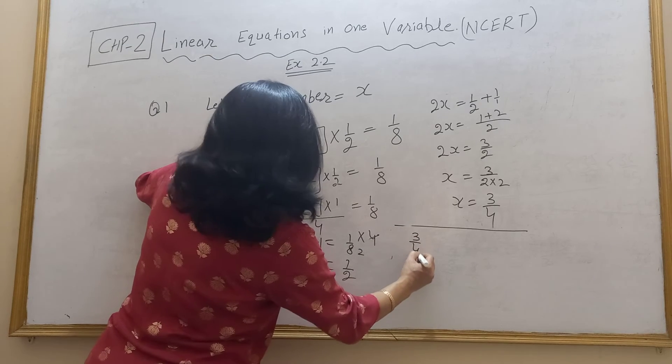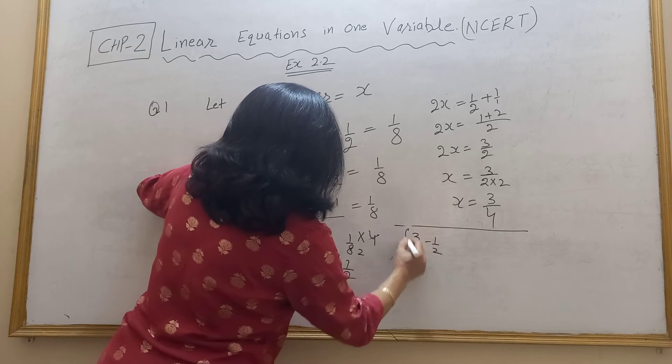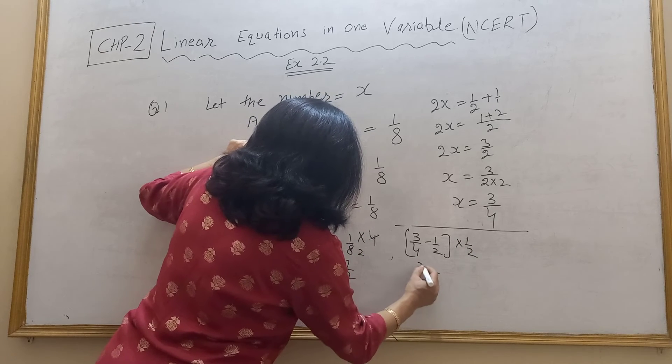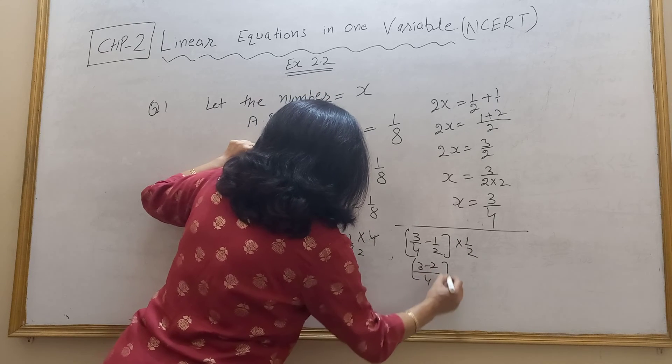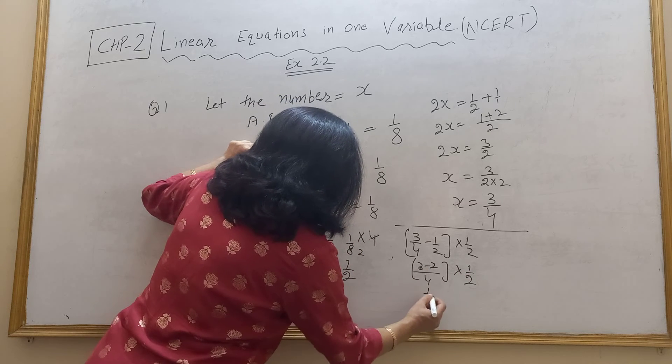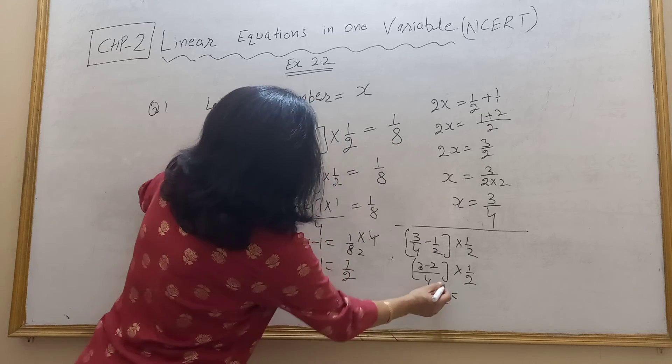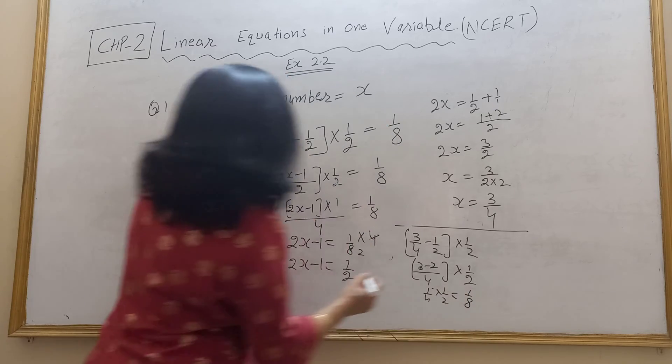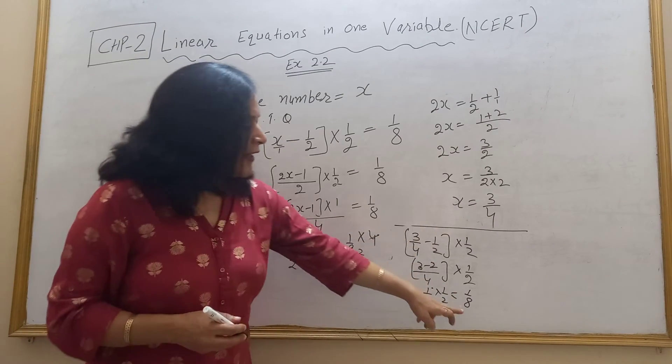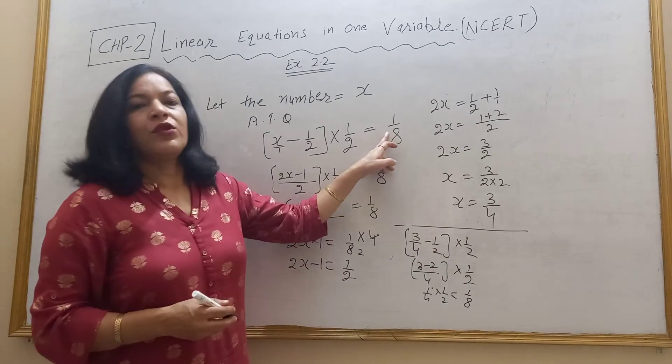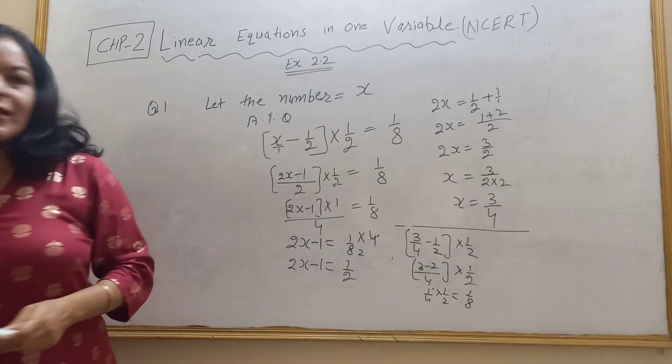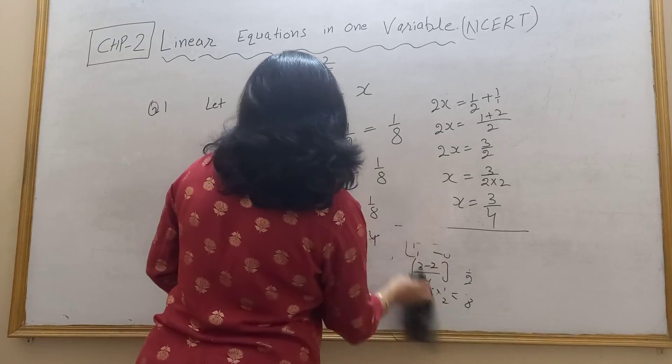3 upon 4 minus 1 by 2 into 1 by 2, LCM 4, 3 minus 2 into 1 upon 2. 3 minus 2 is 1 by 4 into 1 by 8, 1 by 4 into 1 by 8 what is this, 1 upon 8 left hand side, it means your answer correct so you can check.